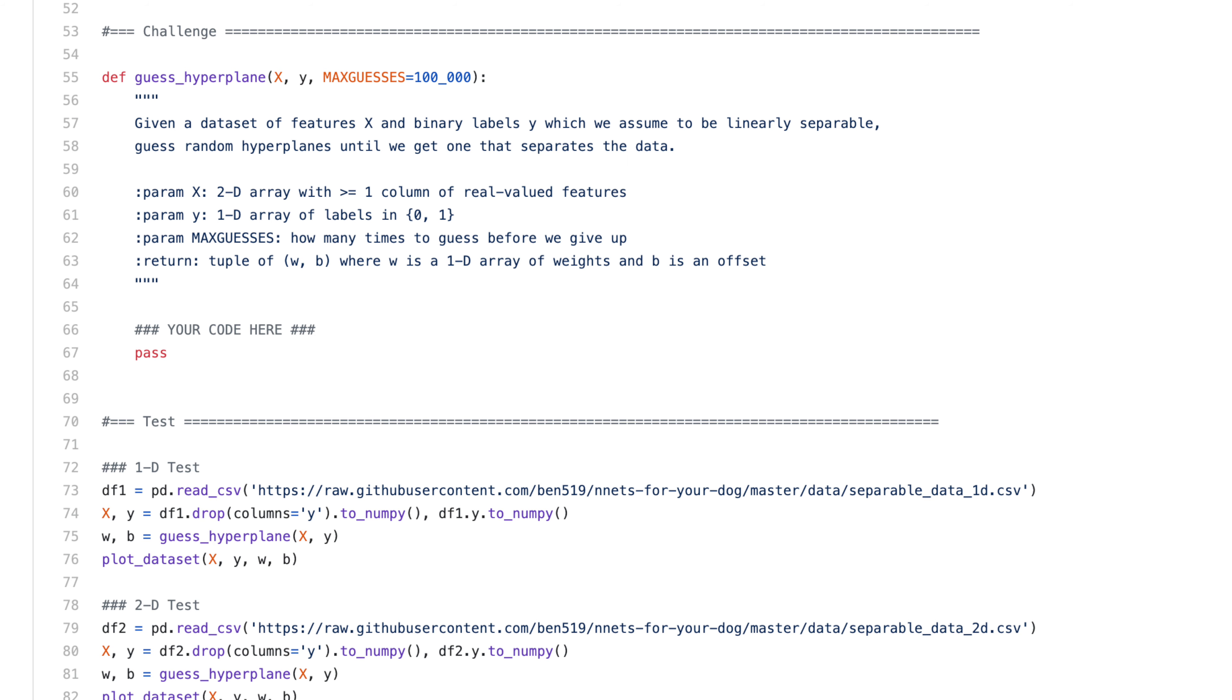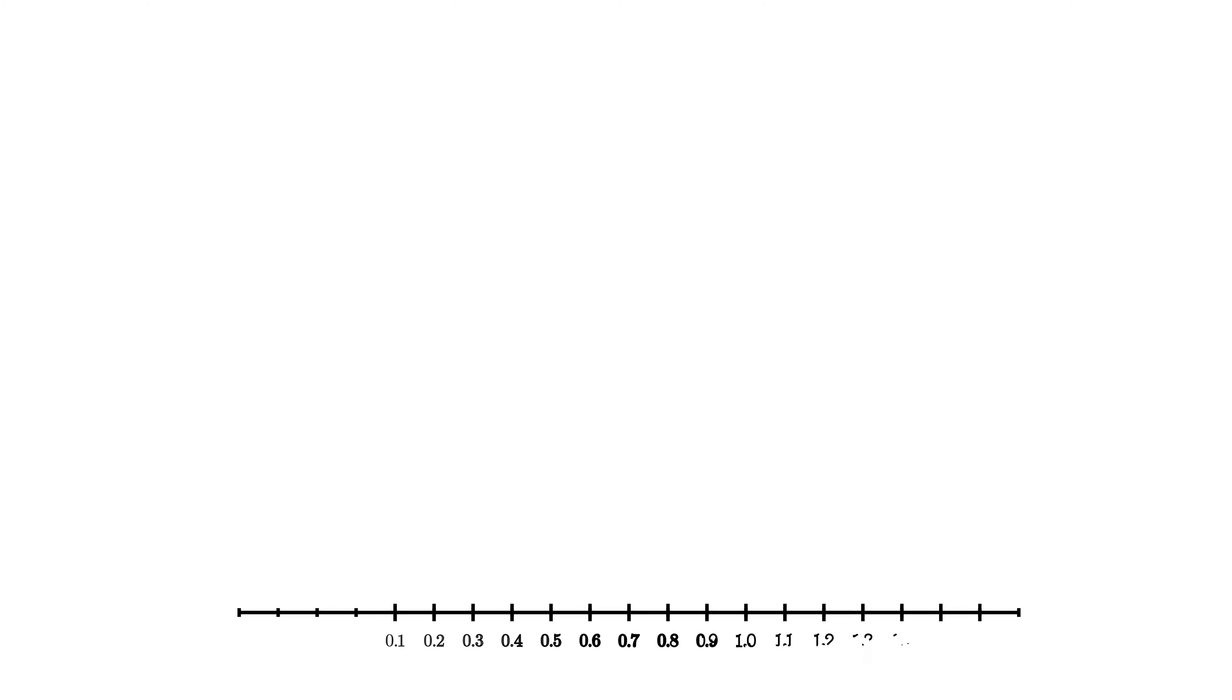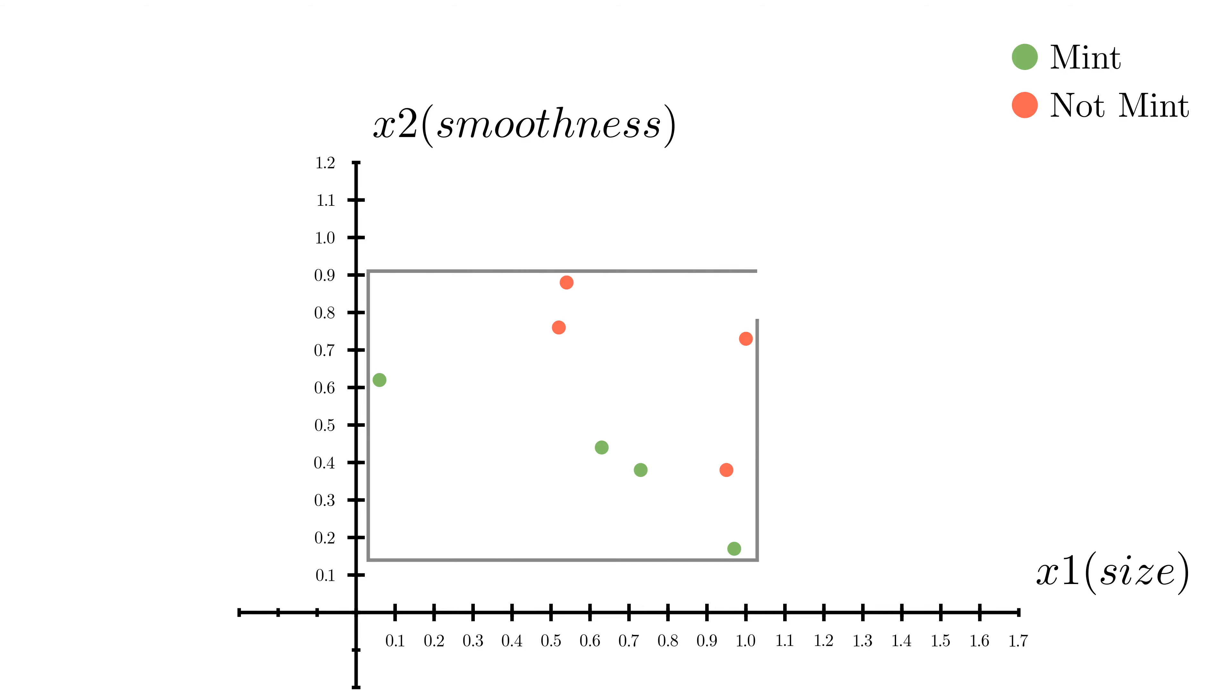Before I explain my code for my guess and check algorithm, let me explain the logic. Rather than guess truly random hyperplanes, I wanted to guess hyperplanes that at least cut through the data. To do this, I imagined putting a bounding box around the data, and then selecting a random point within the bounding box. From there, I guessed random values to determine the slope of the hyperplane, by guessing random weights, and then I solved for the offset b to force the hyperplane to go through p.